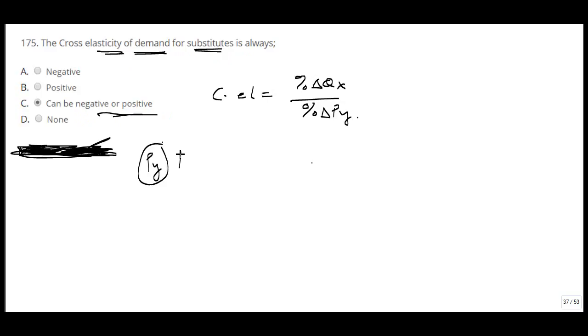So let's say suppose the price of y increases. That means this is positive. What will happen to the quantity demanded of y? It will decrease.